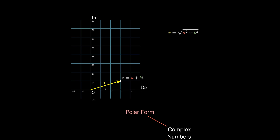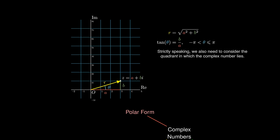We also consider the angle θ that this complex number makes with the positive real axis. Since the run is a and the rise is b, we calculate θ by solving tan(θ) = b/a, where θ is required to lie between -π and π. We call r the modulus of z and θ the argument of z.